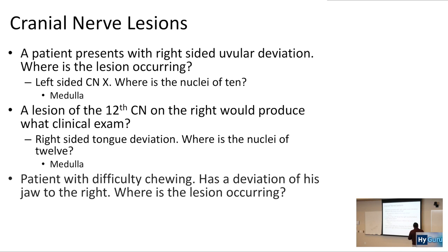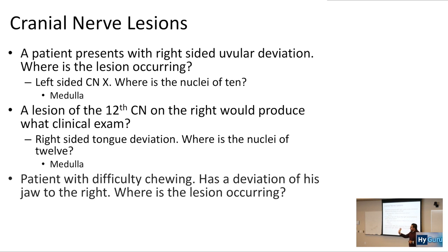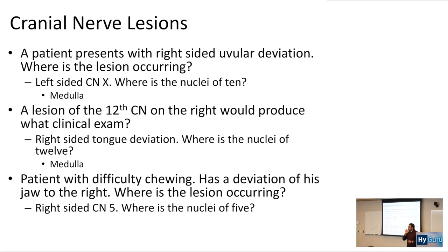A patient with difficulty chewing has a deviation of his jaw to the right. Where is the lesion occurring? When you're talking about right-sided deviation of the jaw, we're talking about cranial nerve number 5, and it's going to be the right side — these are ipsilateral type lesions.